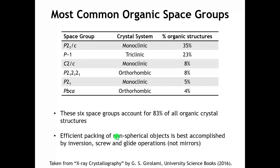So what is it about these operations — screw axes, glide planes, and inversion centers — that is favored in organic crystals? The bottom line is it has to do with the way that non-spherical objects like to pack together. Think about two peanut-shaped objects: the most efficient packing wouldn't involve a mirror plane between them. You would want to offset them in some way, like you might achieve with a glide or a screw axis. That's why we see this preference for these sorts of space groups.